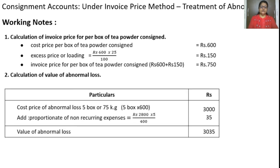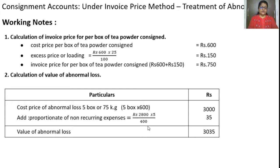Now let us make the calculation of abnormal loss. When calculating abnormal loss, you have to take it at cost price. 75 kg equals 5 boxes. Cost price of abnormal loss: 5 boxes at Rs. 600 = Rs. 3,000. Add proportionate non-recurring expenses: the total expense was Rs. 2,800 for 400 boxes, so for 5 boxes it comes to Rs. 35. Total abnormal loss calculated at cost is Rs. 3,035.